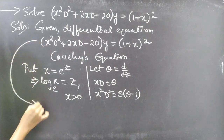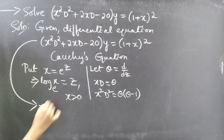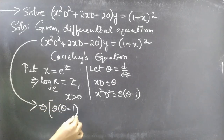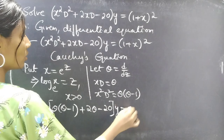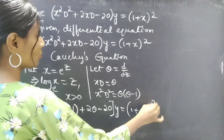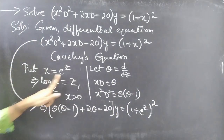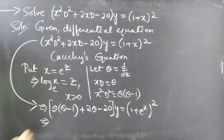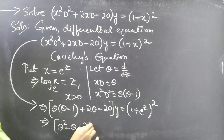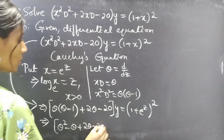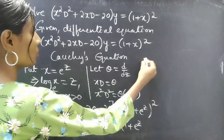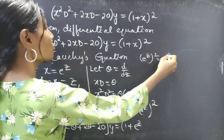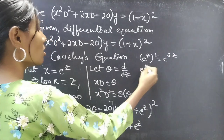Now the original equation becomes theta of theta minus 1 plus 2 theta minus 20 into y equal to 1 plus e power z whole square. We replace x by e power z. Then simplifying, we get theta squared minus theta plus 2 theta minus 20 into y equal to 1 plus e power z whole square.